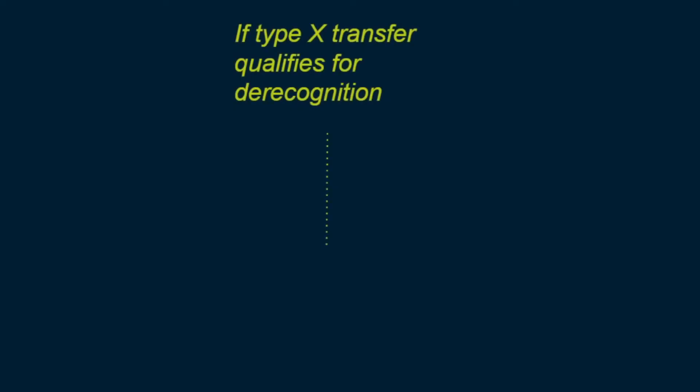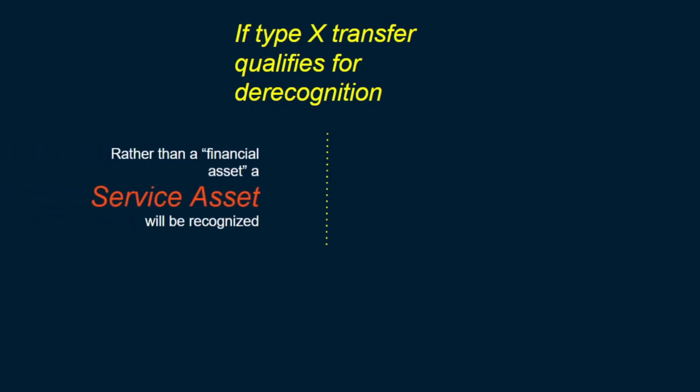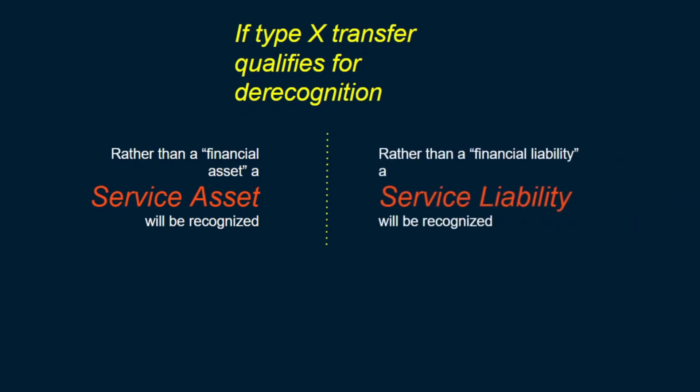Finally, in case of a type X transfer — the indirect transfer where the entity essentially plays as a middleman, receiving cash flows from one entity and paying them to another — in place of the financial asset, a service asset will be recognized and a service liability will also be recognized in favor of the eventual recipient, because the amounts are both receivable and payable.